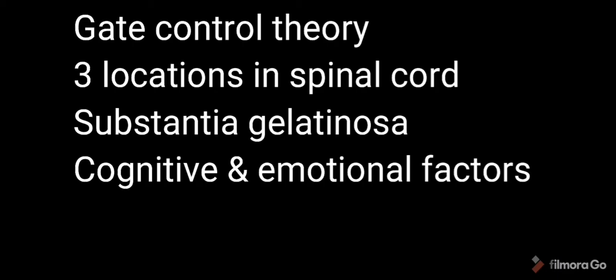The fifth theory is gate control theory, which produced a revolution in pain research. This was postulated by Ronald Melzack and Charles Patrick Wall in 1965. They said when a stimulus gets sent to the brain, it must first travel through three locations in the spinal cord: substantia gelatinosa in dorsal horn, fibers in dorsal corneum, and transmission cells in dorsal horn.